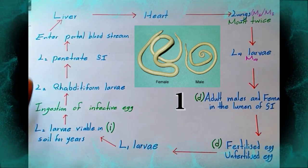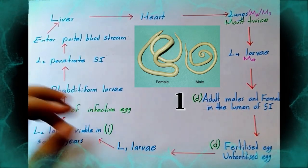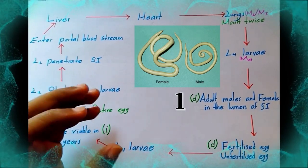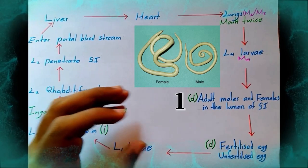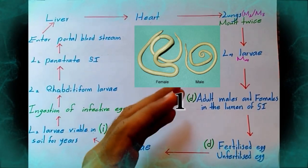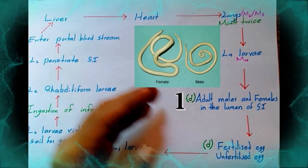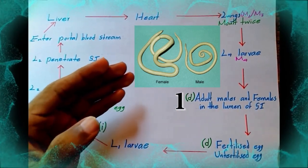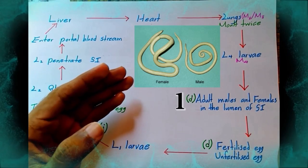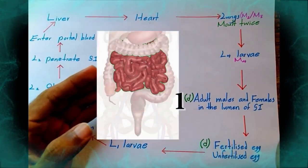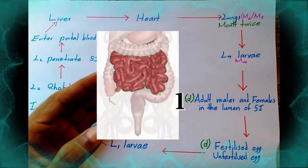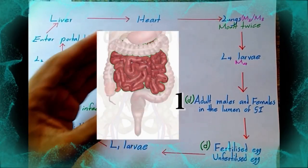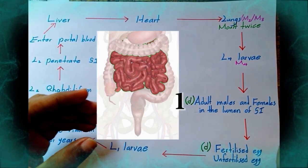As you can see, this is the life cycle of Ascaris lumbricoides. Starting from adult worms — this is the adult female and male worms. Adult worms live in the lumen of the small intestine, as you can see here.